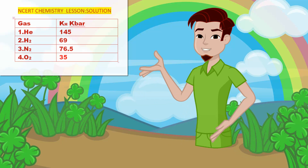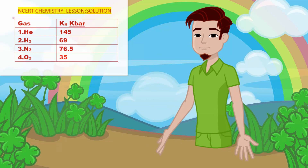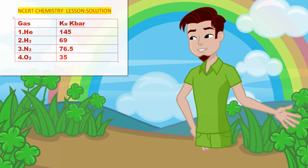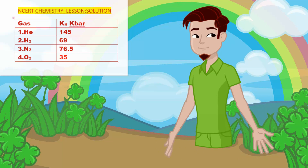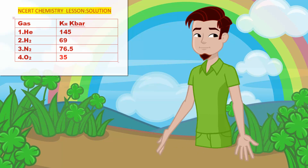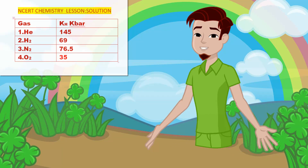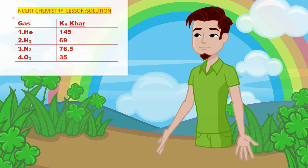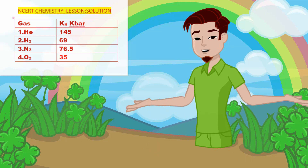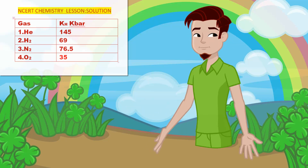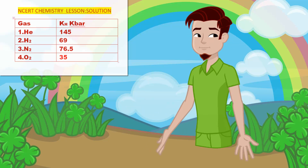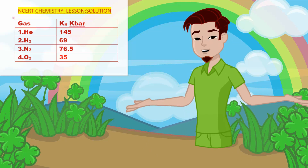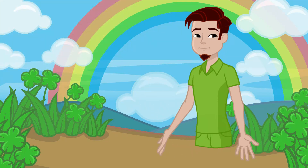So: helium KH value 145, hydrogen 69, nitrogen 76.5, oxygen 35. All at a temperature of 93 Kelvin.